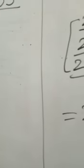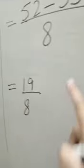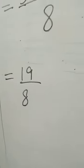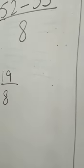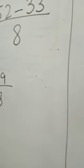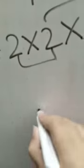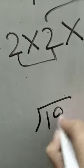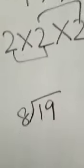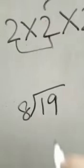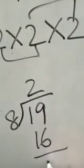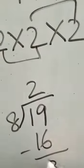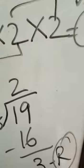Then we will reduce it. But if the number is greater than 8, we will divide it. 8 to 2 is 16, 8 to 3 is 24. 24 is greater; 8 to 2 is 16. Now 9 to 6 is 3. We will write the remainder.